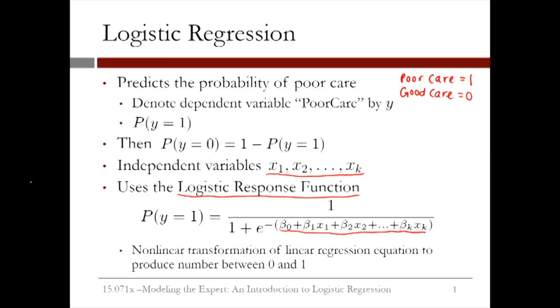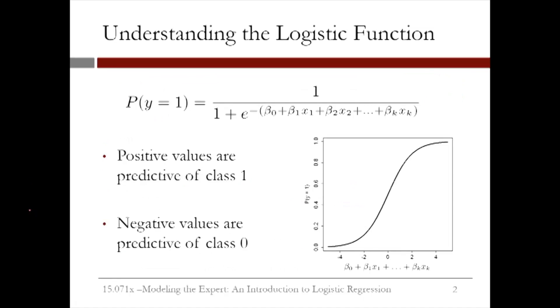Let's understand this function a little better. This plot shows the logistic response function for different values of the linear regression piece. The logistic response function always takes values between 0 and 1, which makes sense since it equals a probability.